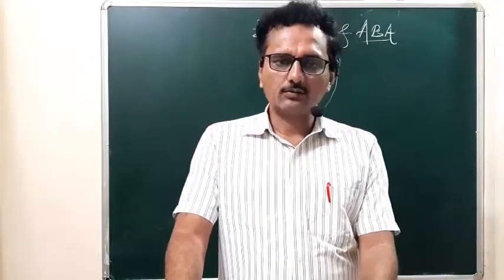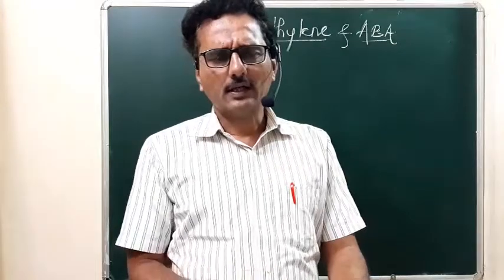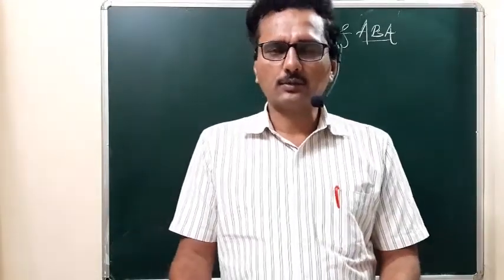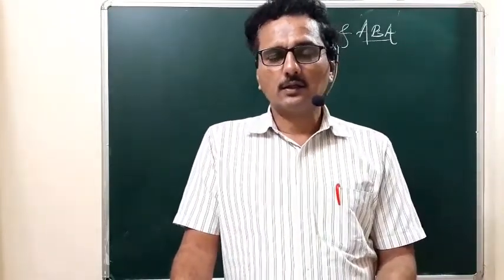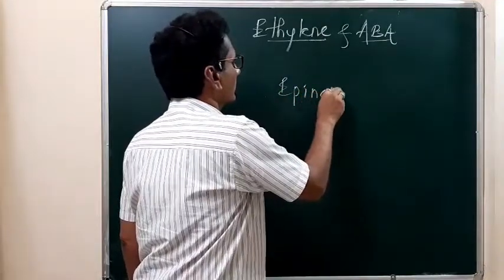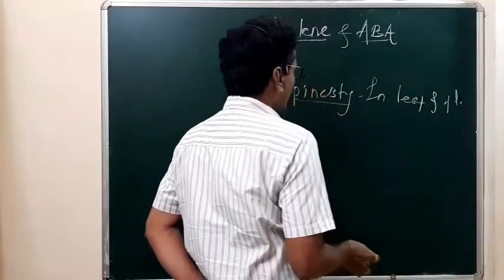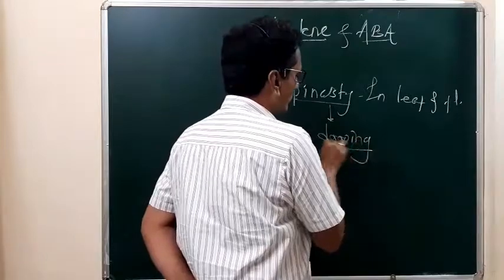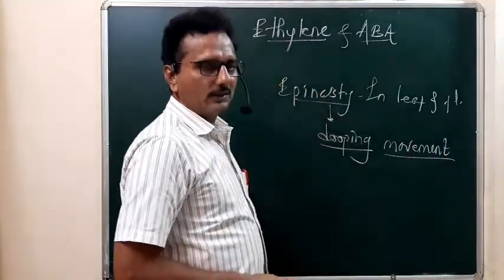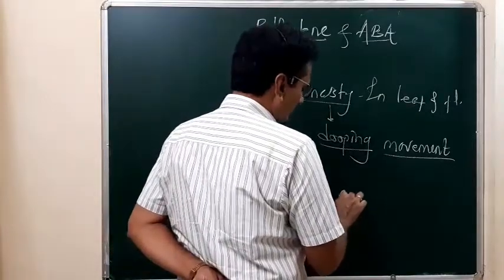Question number 240: which of the following hormone causes epinasty? In the previous theory revision lecture on ethylene and abscisic acid, we studied what is meant by the epinasty movement. Epinasty is seen in the leaf and flower — it is a drooping movement.